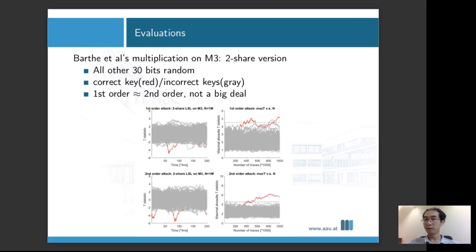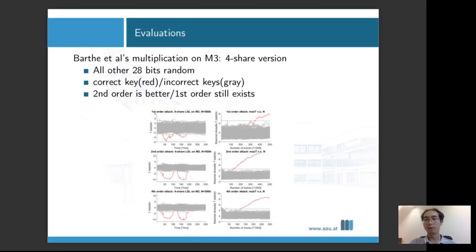More specifically, we are using a two share version where the other 30 bits are set to random. So basically, this is the worst case. In the following graphs, you're going to see the correct key guess in red line and the wrong key guesses in the green lines. So we can see both the first order attack and second order attacks succeed. The second order attack, because this is a two share version, that's basically allowed by your security proof. The first order attack, although it exists, doesn't really seem to be too much a big deal, because the second order attack seems to be more efficient. So we do have first order leakage or interactions that contradict with the model, but that doesn't really give you a security flaw or anything beneficial for the attacker in practice.